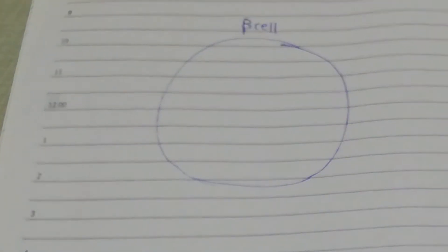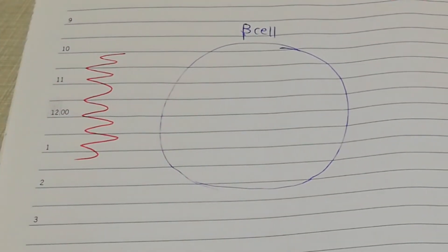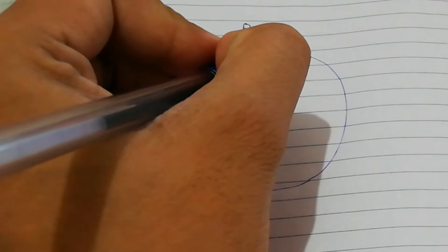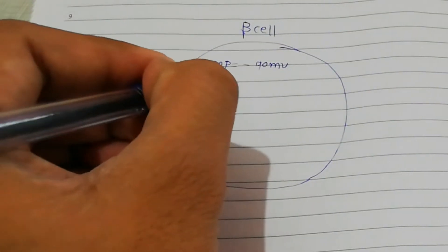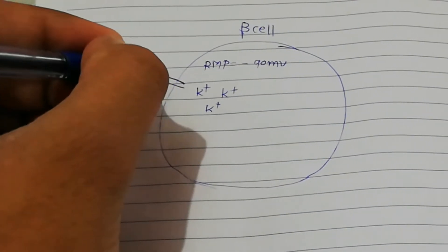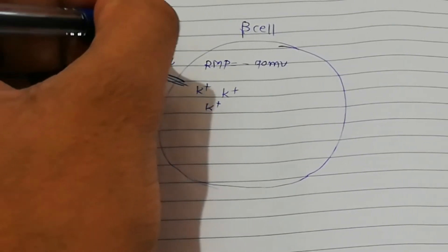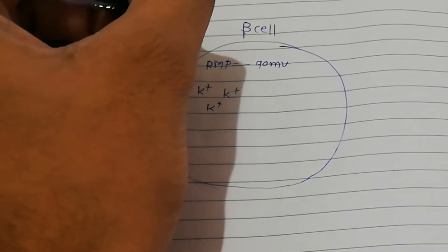Here I've marked two surfaces: this is the blood vessel surface and this is the apical surface. Now, normally the beta cell has a resting membrane potential of minus 90 millivolts. That is because K+ ions move out of the cell via the K+ channel — specifically the ATP-sensitive K+ channel.